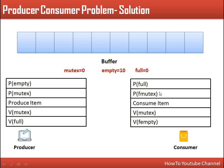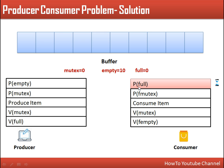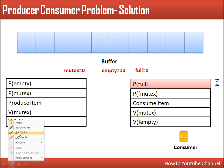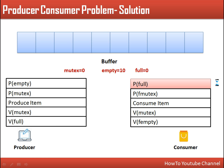With the corrected solution, the consumer executes P(full) first. Full is already 0, so this instruction decreases it to minus 1. Since the semaphore value is less than 0, the consumer starts waiting and does not enter its critical section.